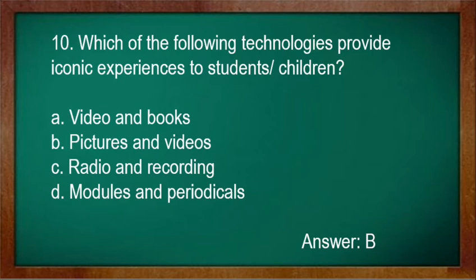Number 9: Which of the following media appeals most to the auditory sense? A. Video and books. B. Pictures and videos. C. Radio and recording. D. Modules and periodicals. Answer: B.